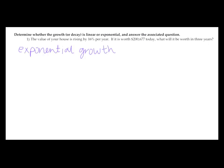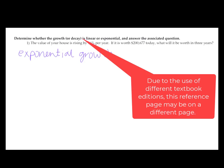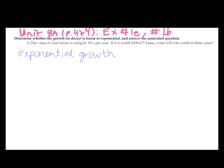For reference, you can refer to Unit 8A, page 474, examples 1E and 1B. 1E is an example problem for exponential decay, and 1B is an example problem for exponential growth. So, back to this problem, we are going to want to calculate the exponential growth for the three years.